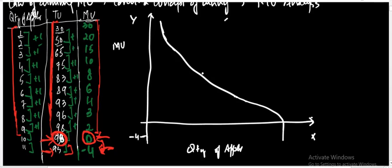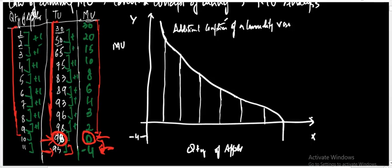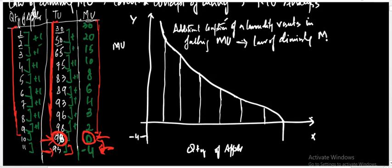This graph shows that as I increase the consumption of apples, the marginal utility tends to fall, which eventually becomes zero and then becomes negative. The additional consumption of a commodity results in falling marginal utility. This is the explanation of the law of diminishing marginal utility.